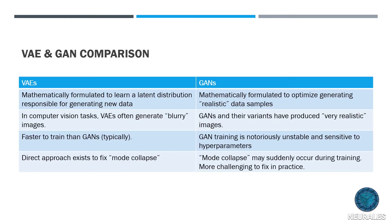A quick rundown of VAEs versus GANs: VAEs learn to optimize a distribution such that the data is sampled from, whereas GANs focus more on generating the data itself with less information about the distribution but better-looking results. GANs are very unstable to train and very sensitive to hyperparameters - they certainly can produce better-looking results, and most people would agree the images look more realistic with GANs versus VAEs, but they have problems. One of them is mode collapse.